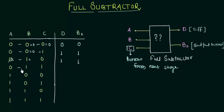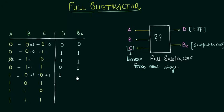Again 0 minus 1 minus 0: it borrows and becomes 2, so 2 minus 1 gives difference 1. For 0 minus 1 minus 1, a borrow is needed making it 2, and 1 minus 1 is 0, borrow is 1. Then 1 minus 0 minus 0 is 1 with no borrow, and 1 minus 0 minus 1 gives difference 0 with no borrow.